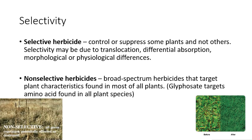Some herbicides are selective and can specifically target a particular plant species or group. For example, we have herbicides that are grass-selective — they target and kill grasses without broadly affecting other plants. We might have the opposite for lawn care and turf management, killing broad-leafed plants without affecting grasses. Then there are herbicides like glyphosate, or Roundup, which target an amino acid found widely in most all plants, making them non-selective.